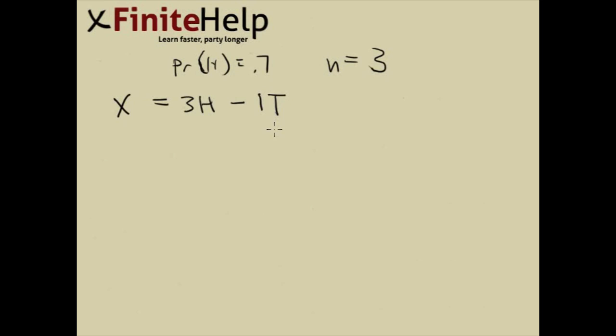How many different values are possible for the random variable X? So let's look at the outcomes first. Again, this works out just like the multiples in an arrow, with head and tail.